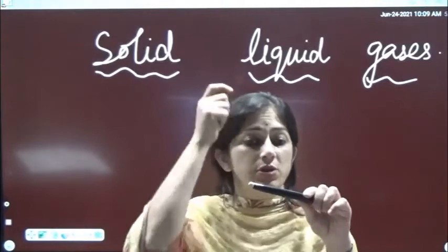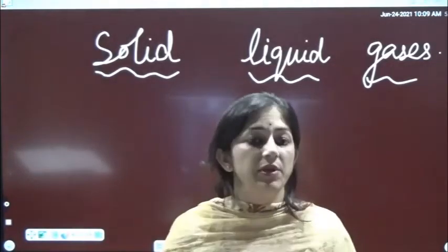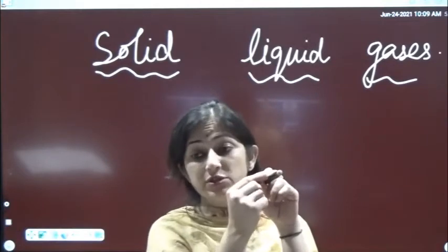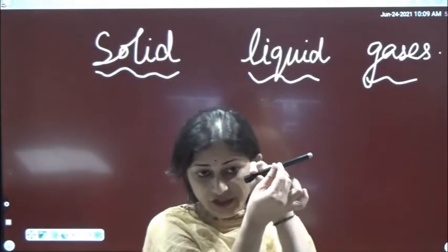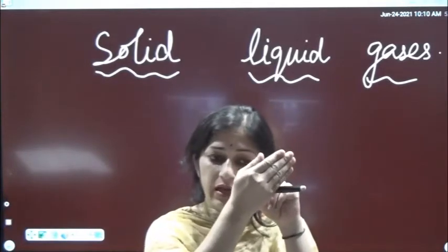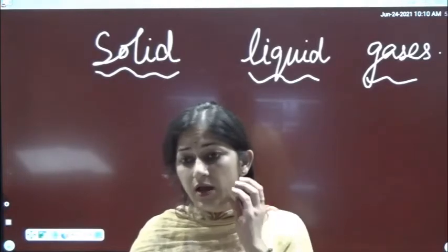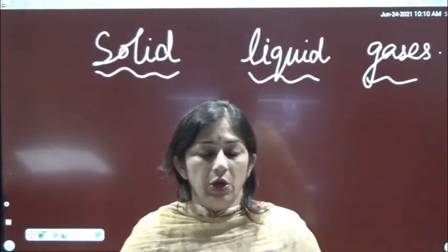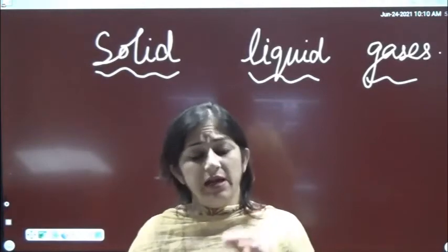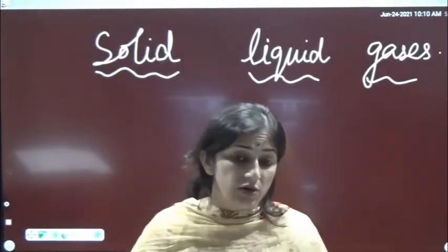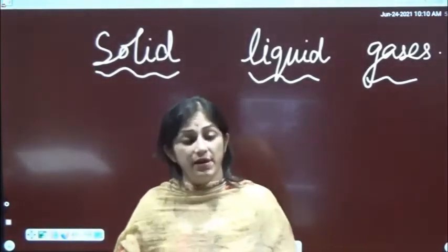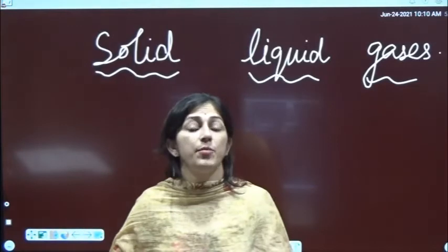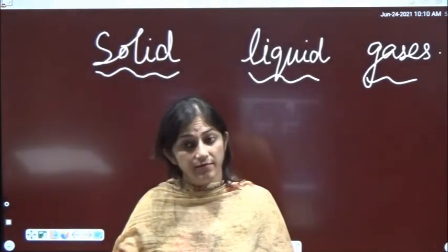One particle holds another particle very strongly, attached to each other. If I want to break it, I will have to bring a hammer and strike it - only then will it break. It means you have to apply a force greater than the forces of attraction inside the particles. Until you apply more force than that, it will not break. So on the basis of observations, solids are substances that have definite volume, definite shape, definite size, and very strong forces of attraction. Clear?